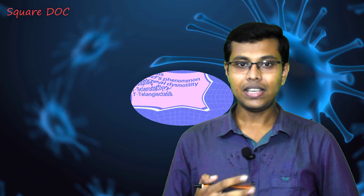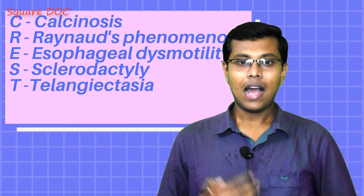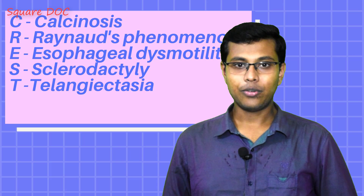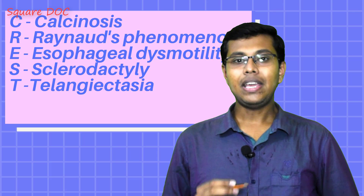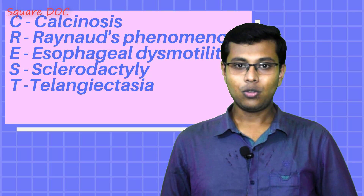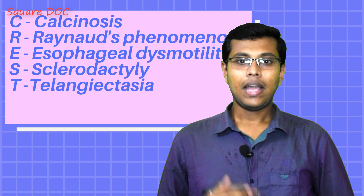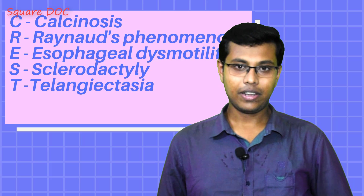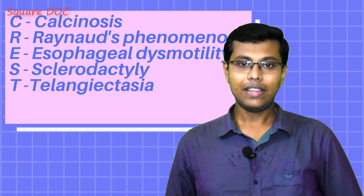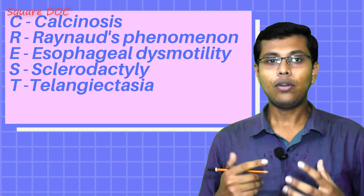CREST Syndrome stands for: C stands for Calcinosis, R stands for Raynaud's Phenomena, E stands for Esophageal Dysmotility, S stands for Sclerodactyly, and T stands for Telangiectasias.